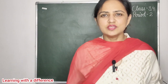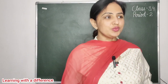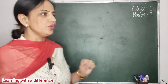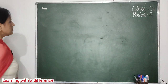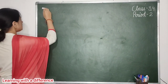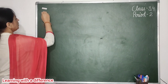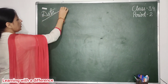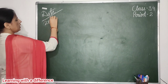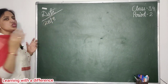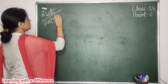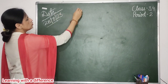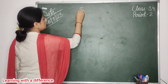Good morning class. Good morning students. How are you all? Fine. Very good. Now you all see here. What is the date today? It is 28th. And which month is going on? It is March. Very good, so everybody see here.